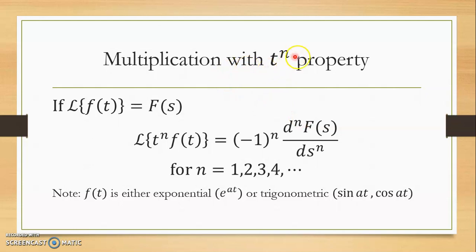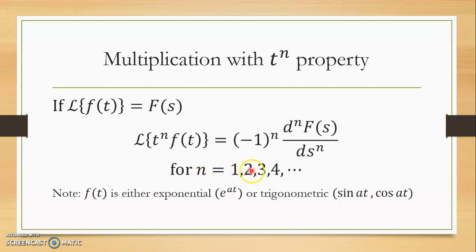For multiplication with t to the power of n: if the Laplace transform of f(t) equals F(s), then for the function in the form of t^n · f(t), the Laplace transform of t^n · f(t) is equal to (-1)^n times the nth derivative of F(s), where n is 1, 2, 3, 4 and so on — a positive integer.